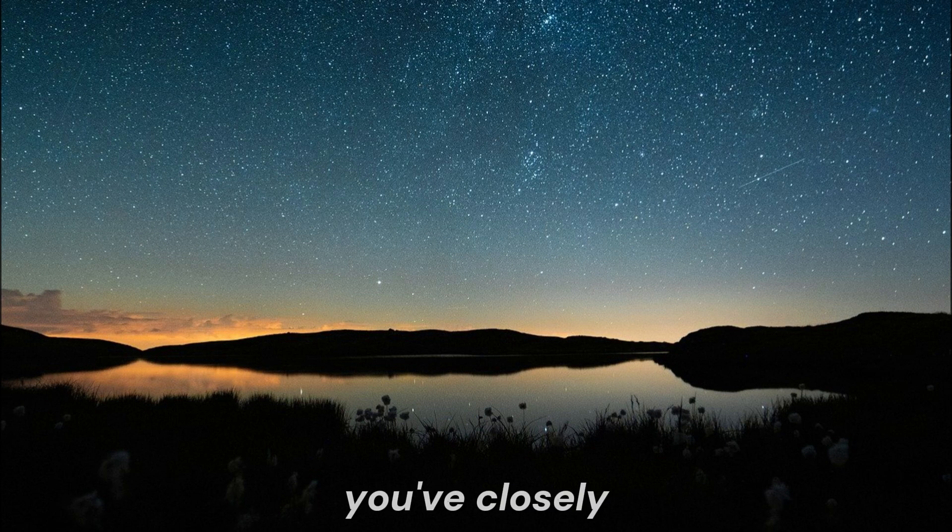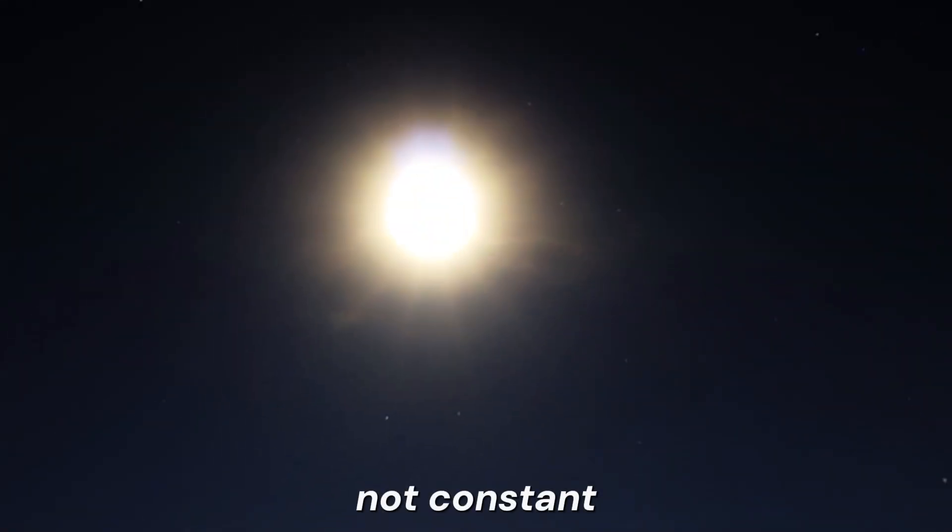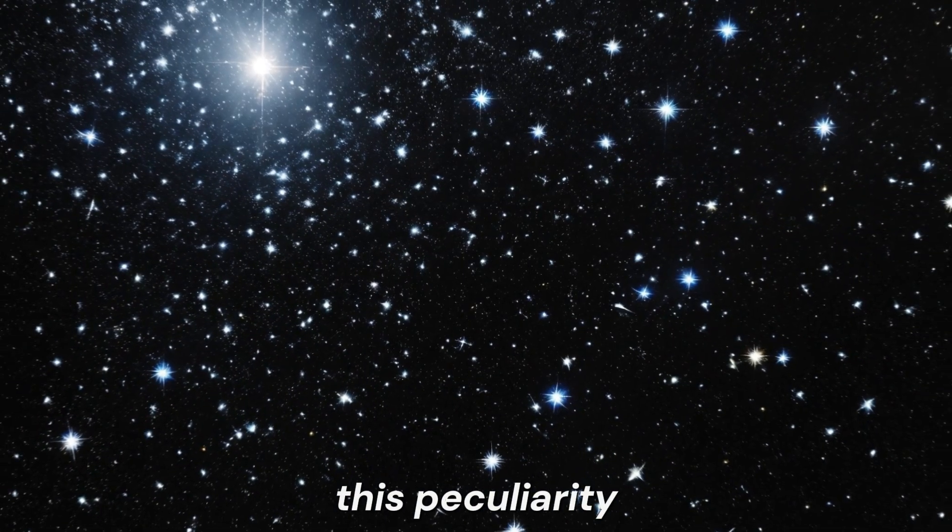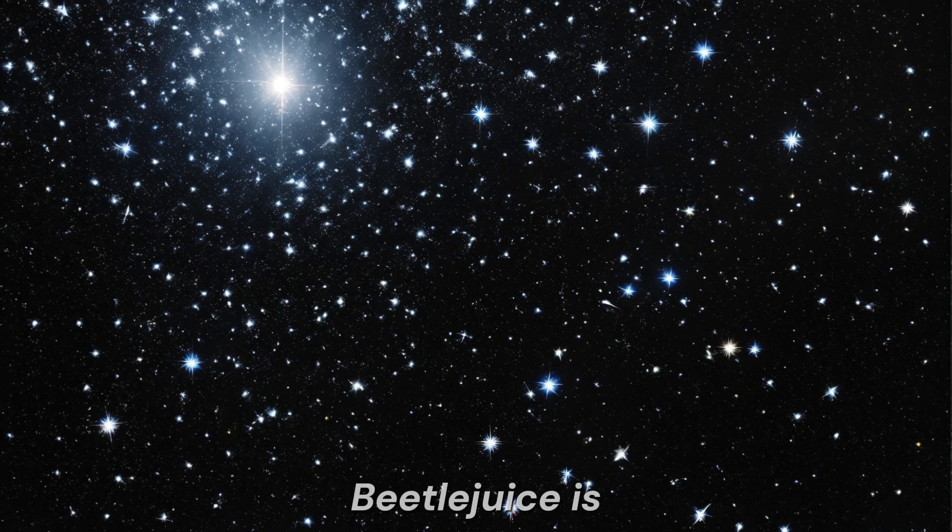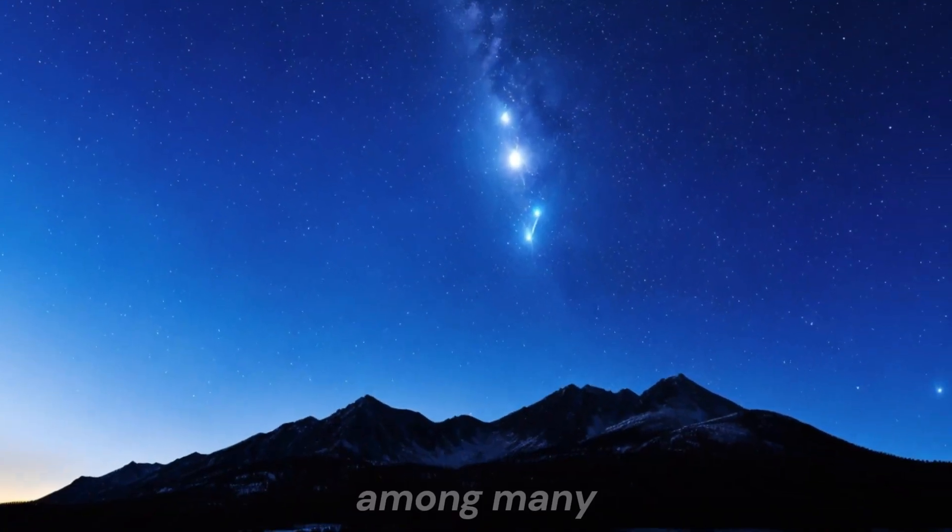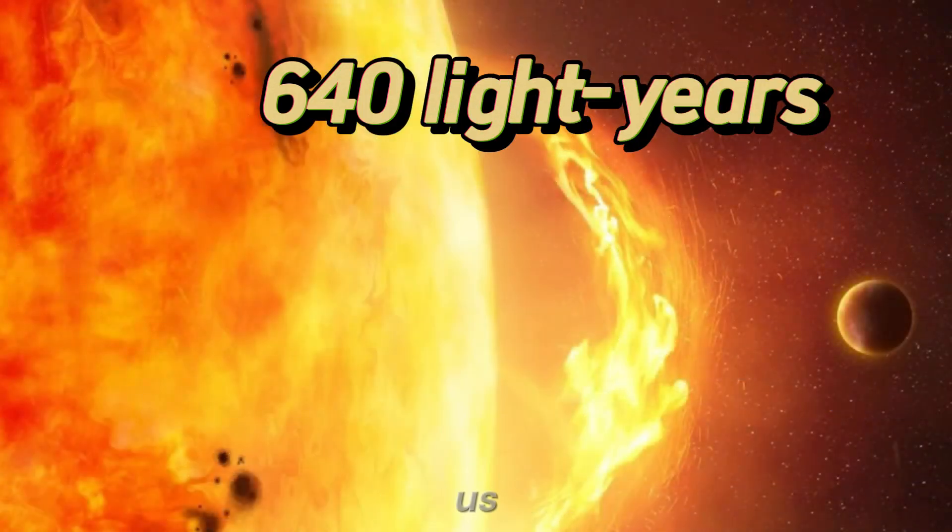However, if you've closely observed this star, you may have noticed that its brightness is not constant. In fact, it varies periodically. This peculiarity is no coincidence. Betelgeuse is no ordinary star. Despite appearing just one among many in the celestial vault, it's located over 640 light-years away from us.